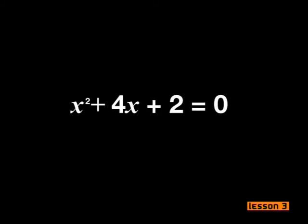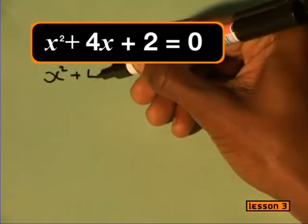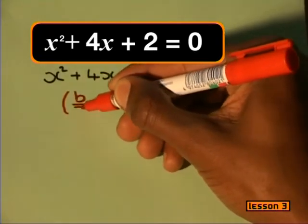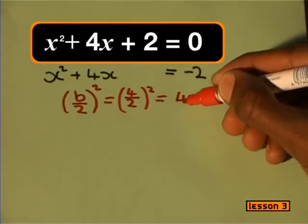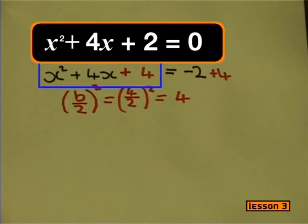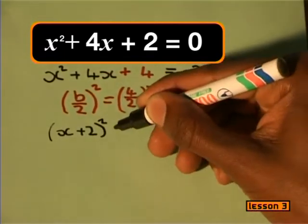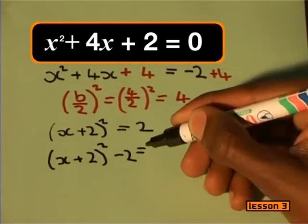Have a look at this equation. Can you complete the square here? Yes, I think so — we did that before. First, I check that the coefficient of x squared is 1, which it is. Then I move the constant to the other side of the equation. Now I take the coefficient of x and halve it, then square it, which gives me 4. I add the 4 to both sides of the equation. This gives me a perfect square trinomial on the left-hand side, so I can write that in factorized form as x plus 2 all squared. Then I take the constant back to the left-hand side. Very well done — I see you've been practicing. Thanks.